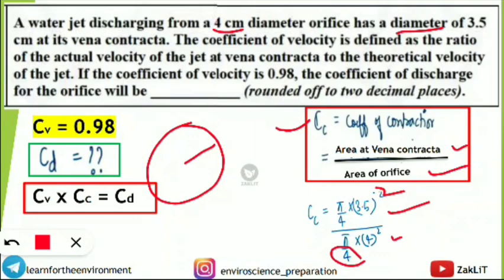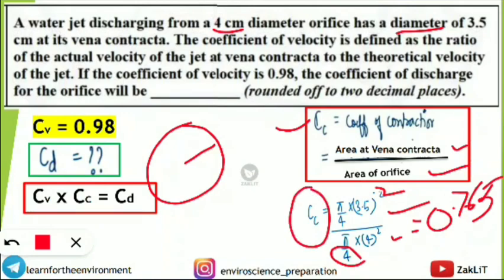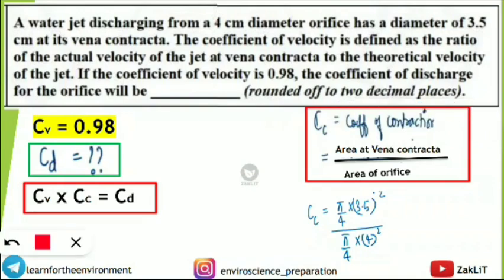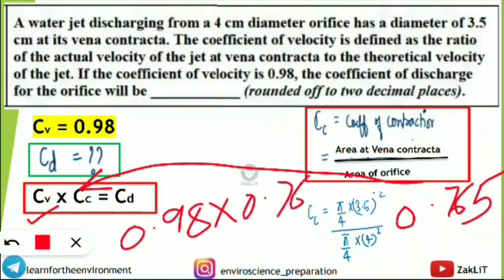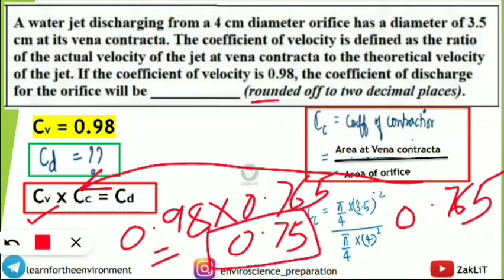Solving that division, we get cc = 0.765. Now we simply put the values into the main formula: cd = cv × cc = 0.98 × 0.765 = 0.75. So the coefficient of discharge is 0.75.